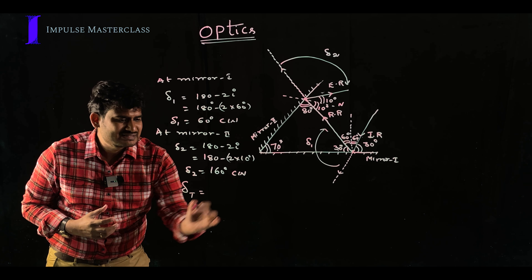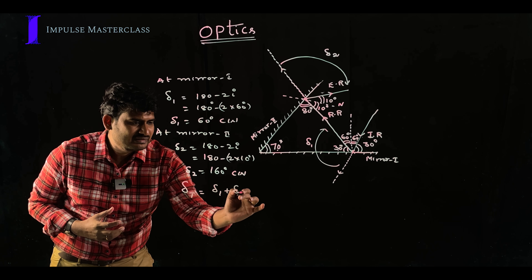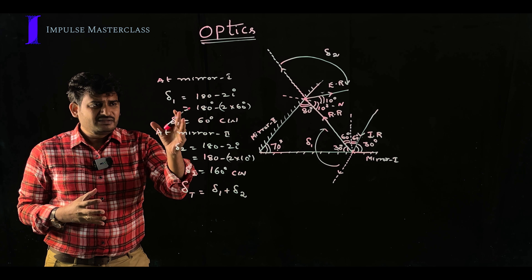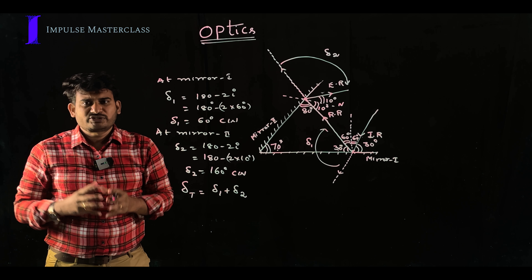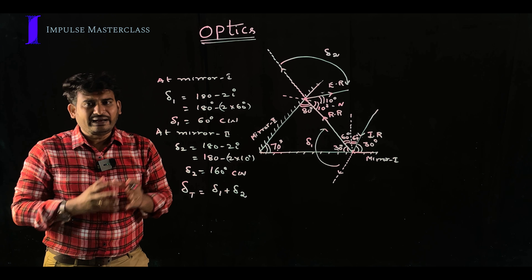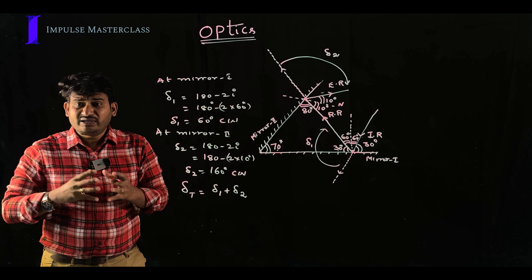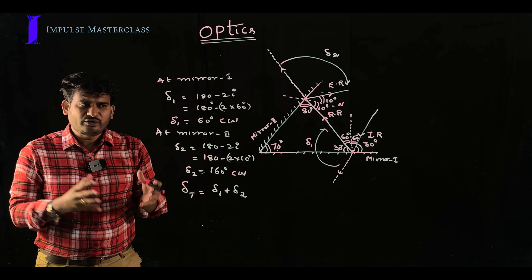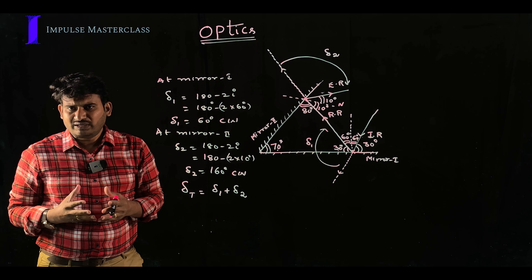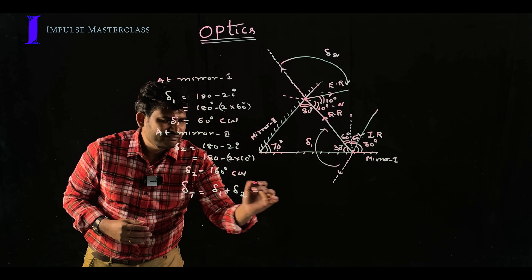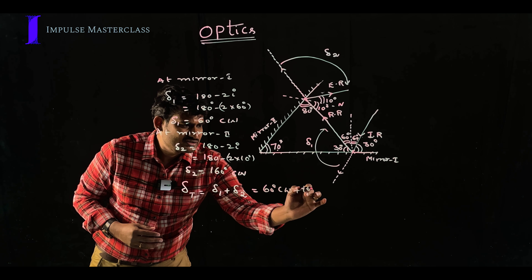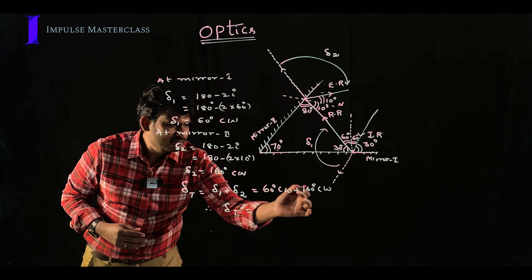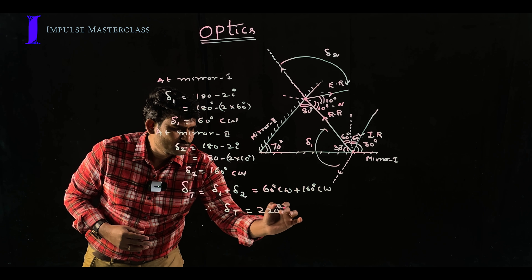Therefore, total deviation = delta 1 + delta 2. Students, be careful about addition: when both deviations are in the same direction (both clockwise or both anti-clockwise), you add them; if one is clockwise and one is anti-clockwise, you subtract. Here, both are clockwise, so total deviation = 60 + 160 = 220 degrees clockwise.